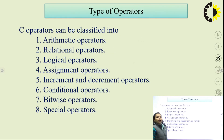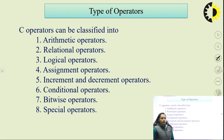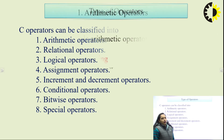C provides various types of operators. Few of them are arithmetic operators, relational operators, logical operators, assignment operators, increment and decrement operators, conditional operators, bitwise operators, and special operators. One by one we are going to discuss all these operators. Let us start with the arithmetic operators.